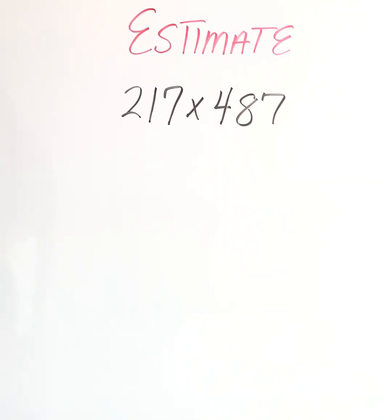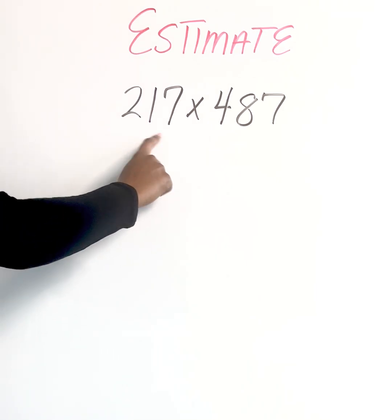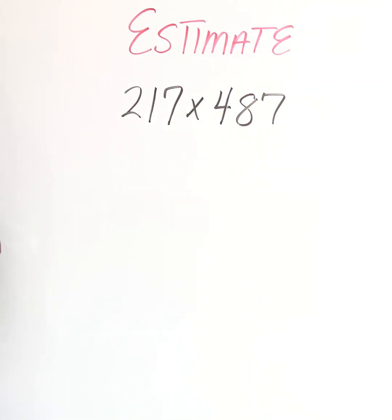All right, let's go ahead and check out example four. So for example four, it says estimate the product of 217 times 487.